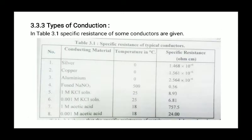Types of conductance of conductors. There are various types of conductors or conducting material: Silver, Copper, Aluminum, Fused NaNO3, 1 molar KCl solution, 0.001 Molar KCl solution, etc.